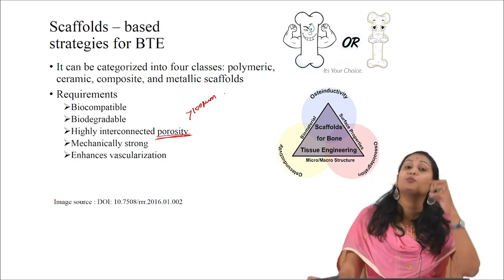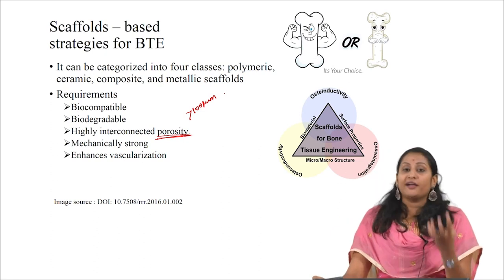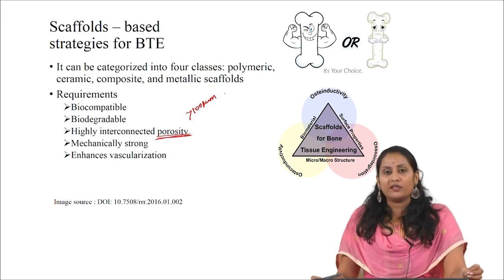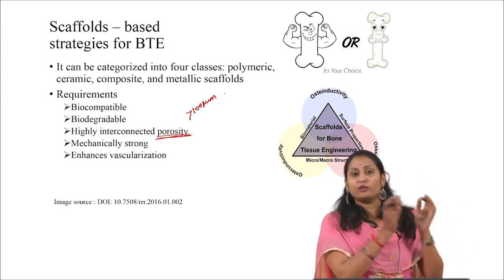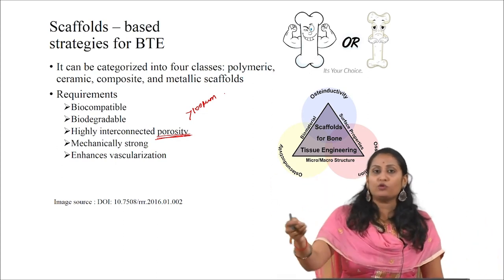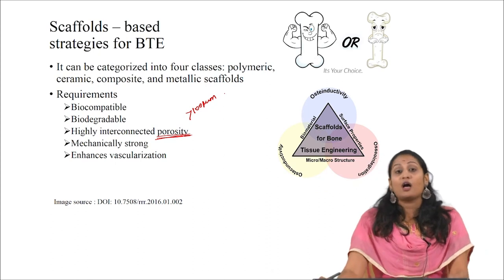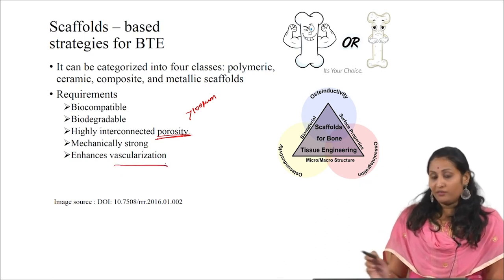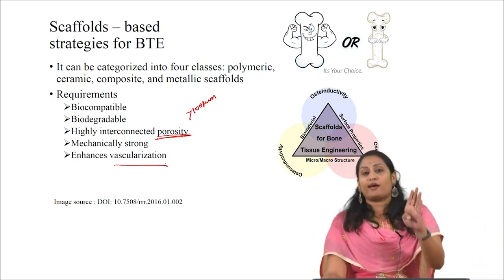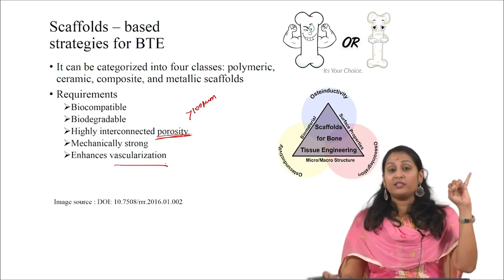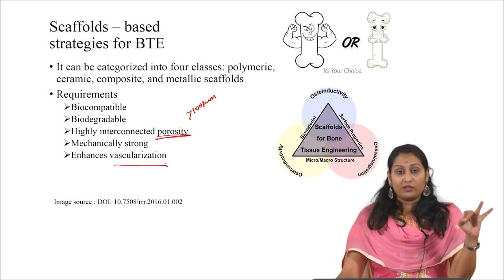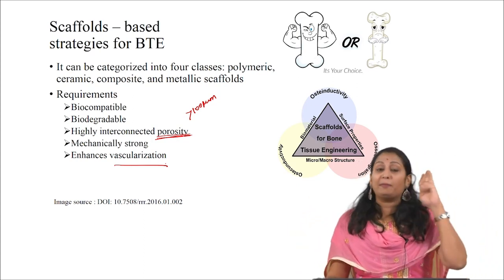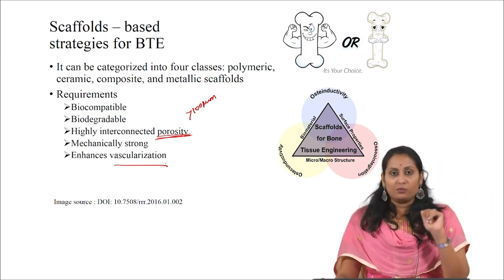The scaffold should be mechanically strong. Since we are aiming for bone tissue engineering, it should ideally be strong and mimic the properties of the target bone — for cortical bone tissue engineering it should have mechanical properties similar to cortical bone, and for cancellous bone it should mimic the properties of spongy bone. It should also enhance vascularization, which is the formation of new blood vessels. In summary, any ideal scaffold for bone tissue engineering should be: biocompatible, non-toxic, biodegradable, have highly interconnected porosity, be mechanically strong, and enhance vascularization.